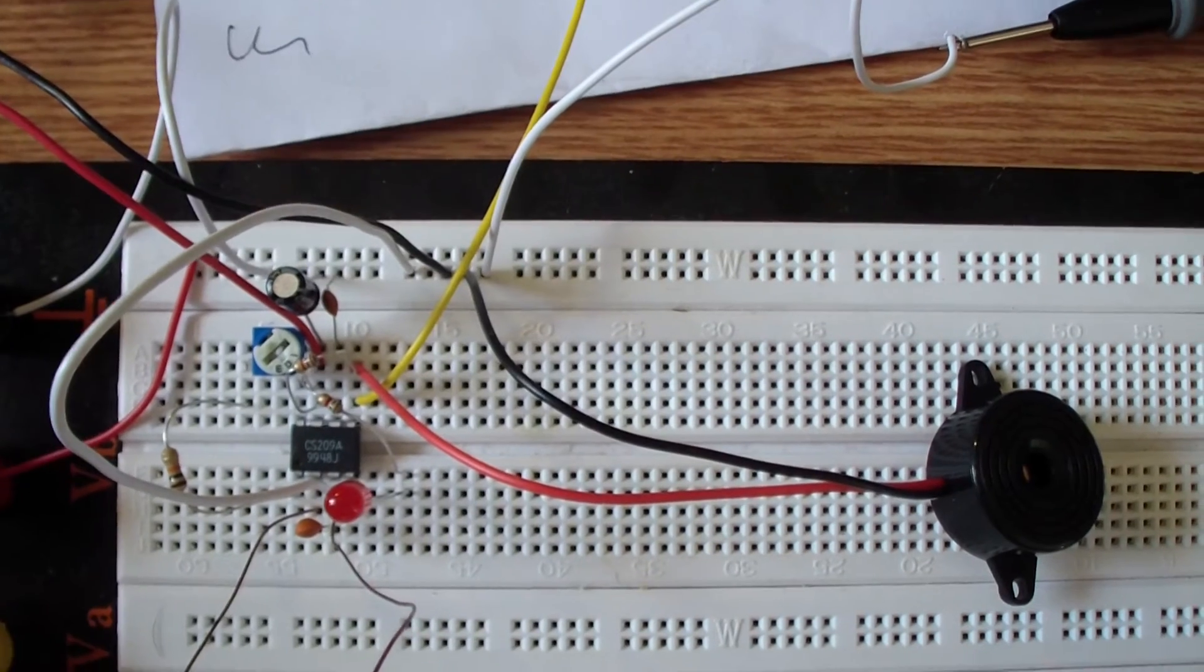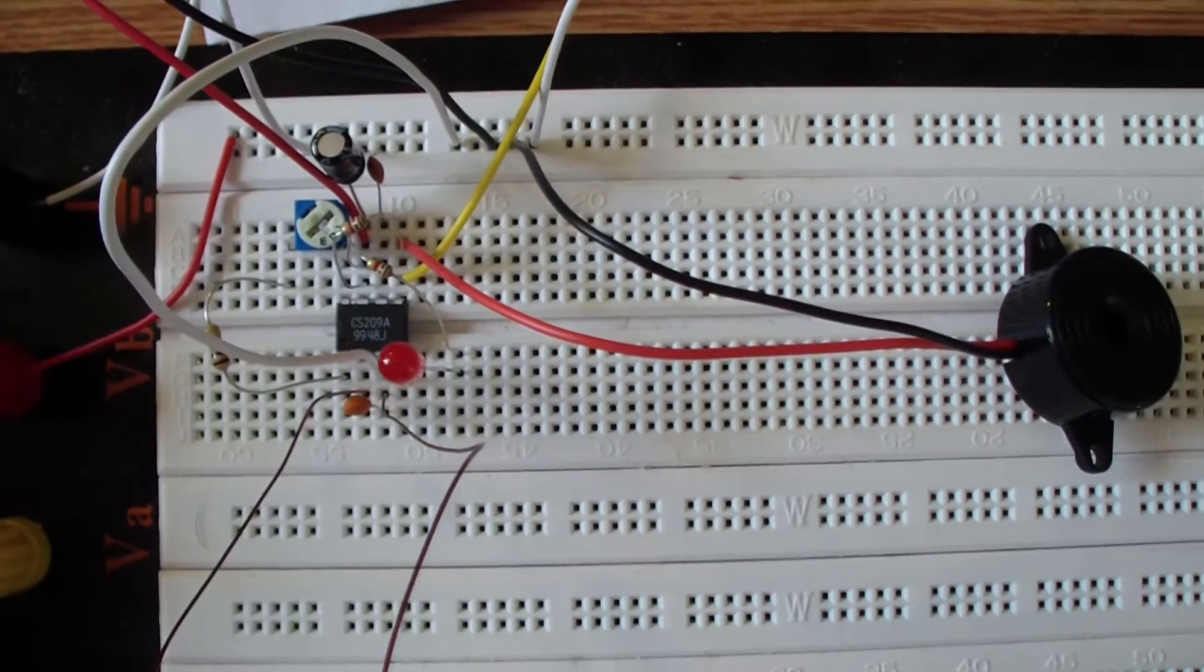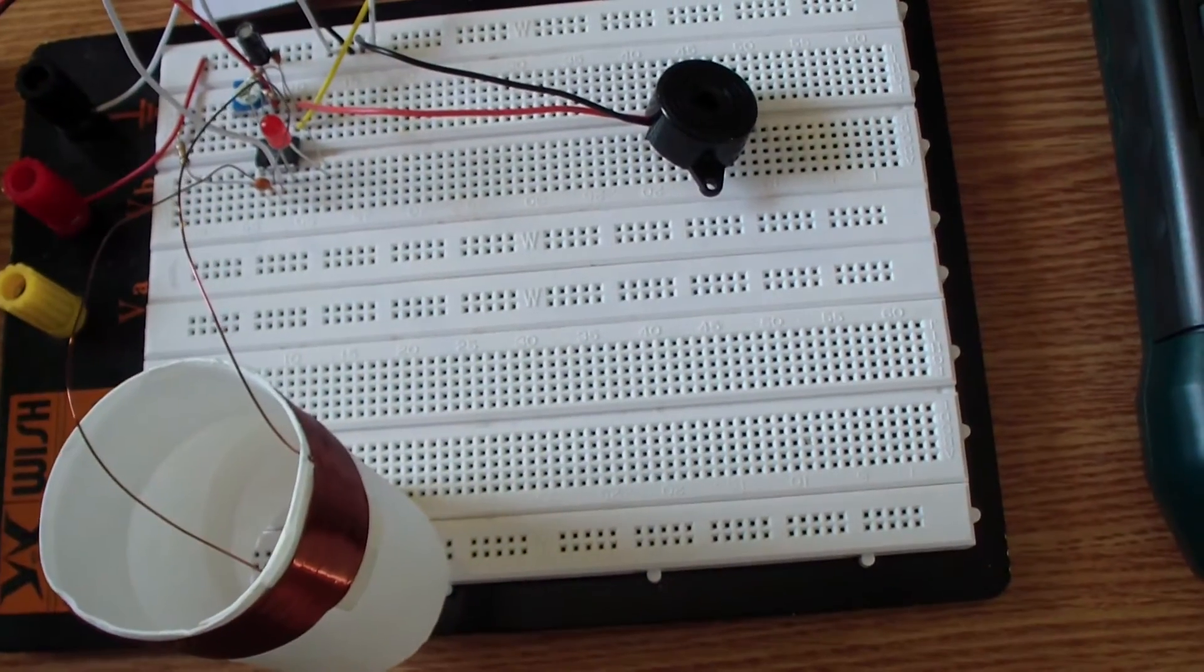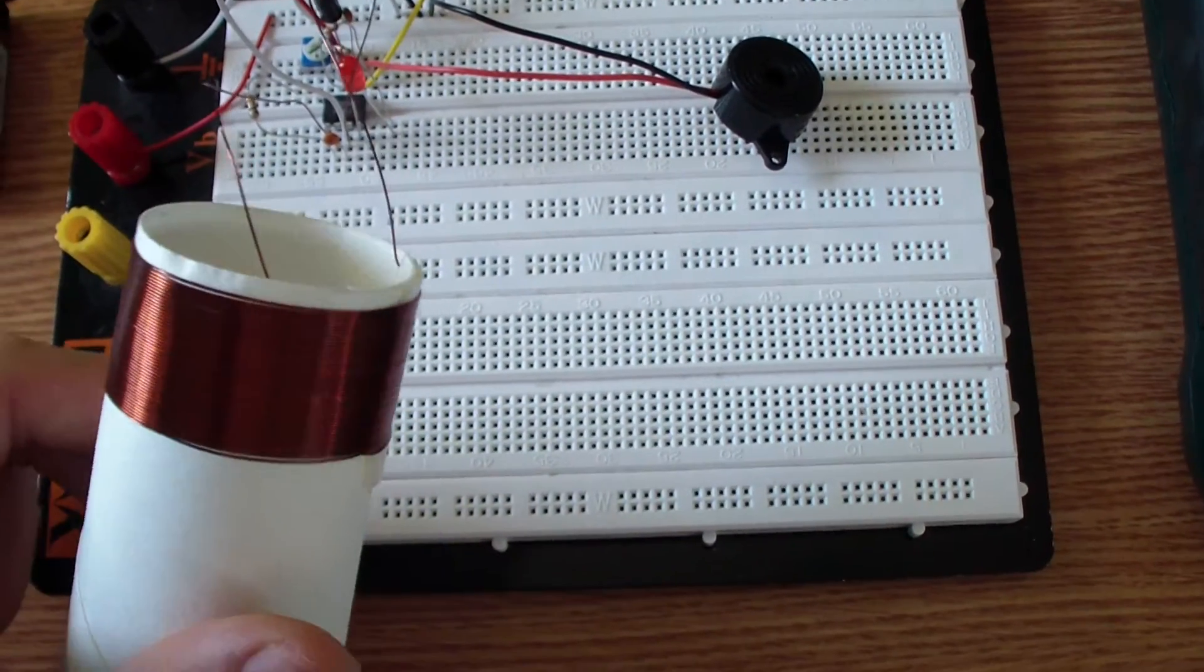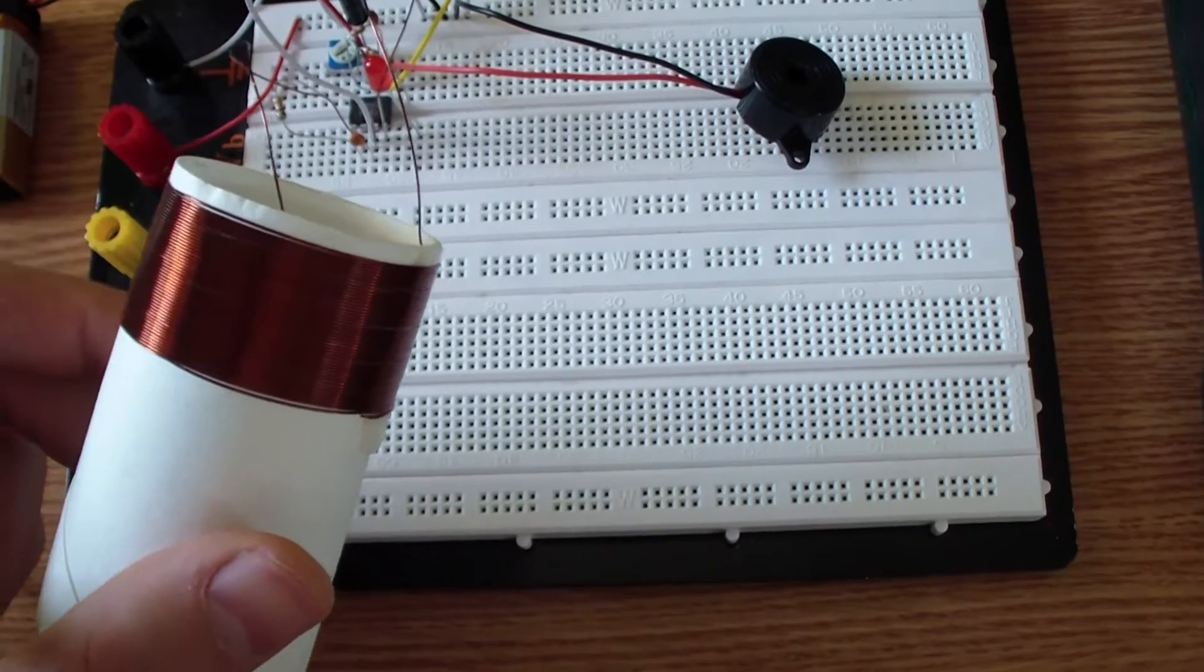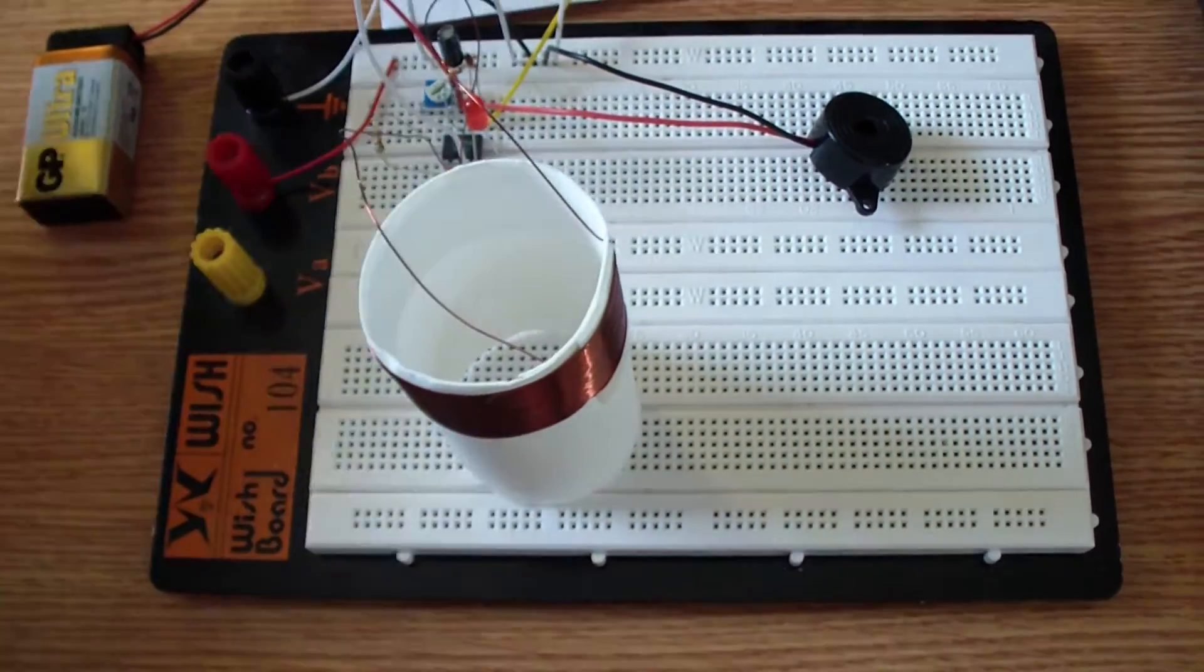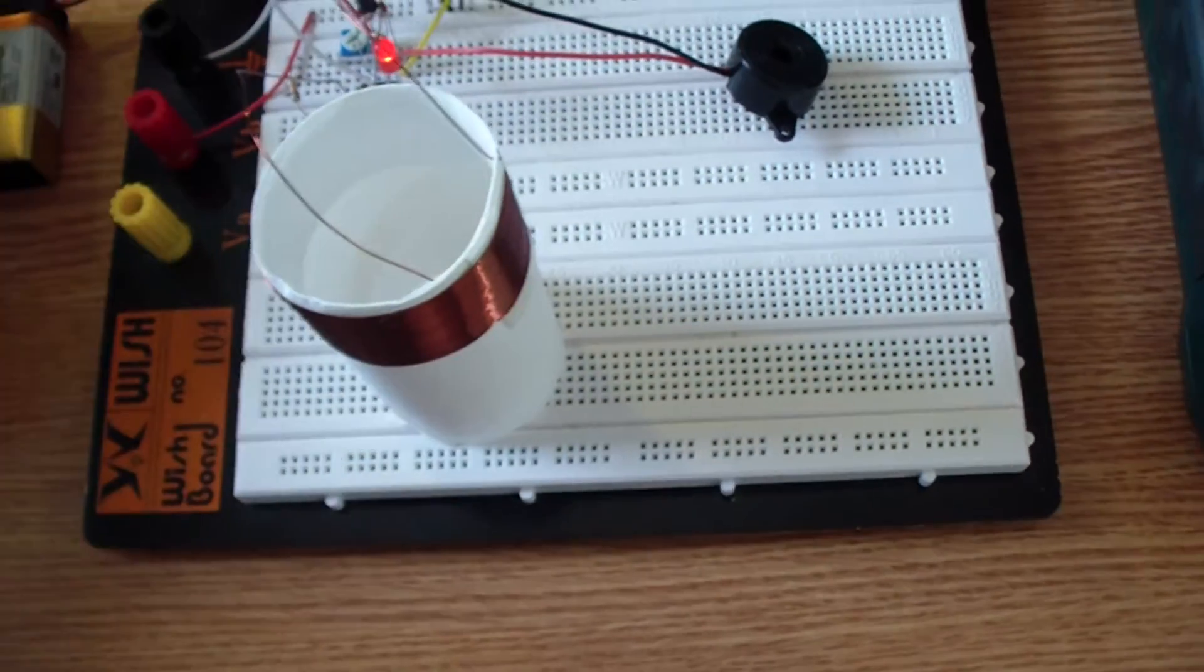Here I have a coil, 50 turns of 0.5 mm wire on 4 cm diameter.